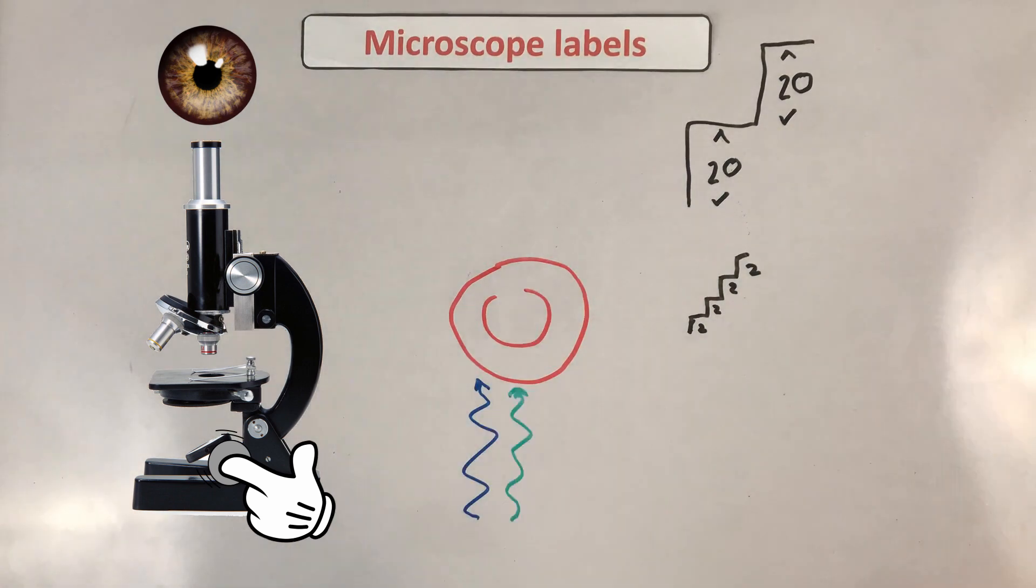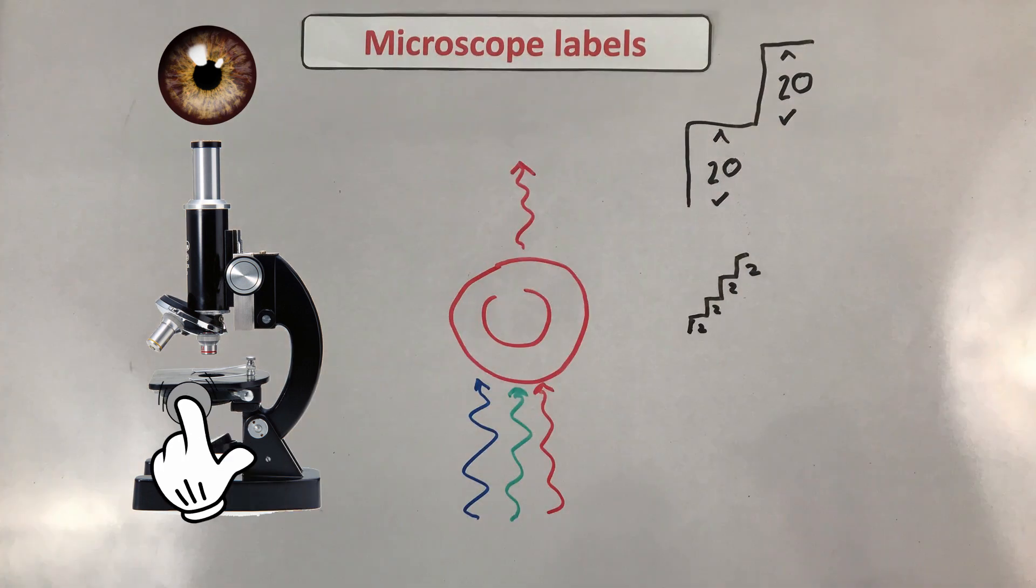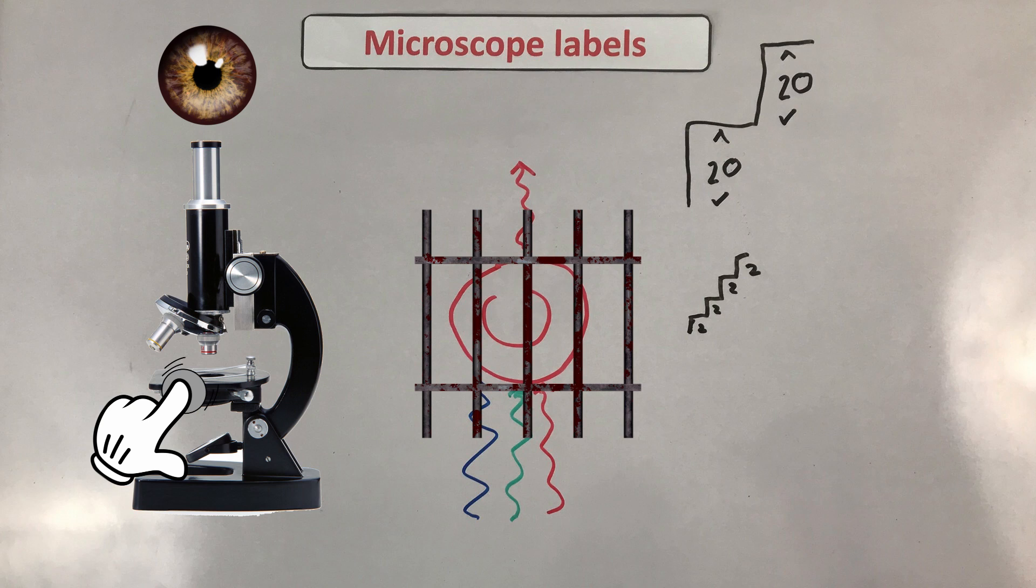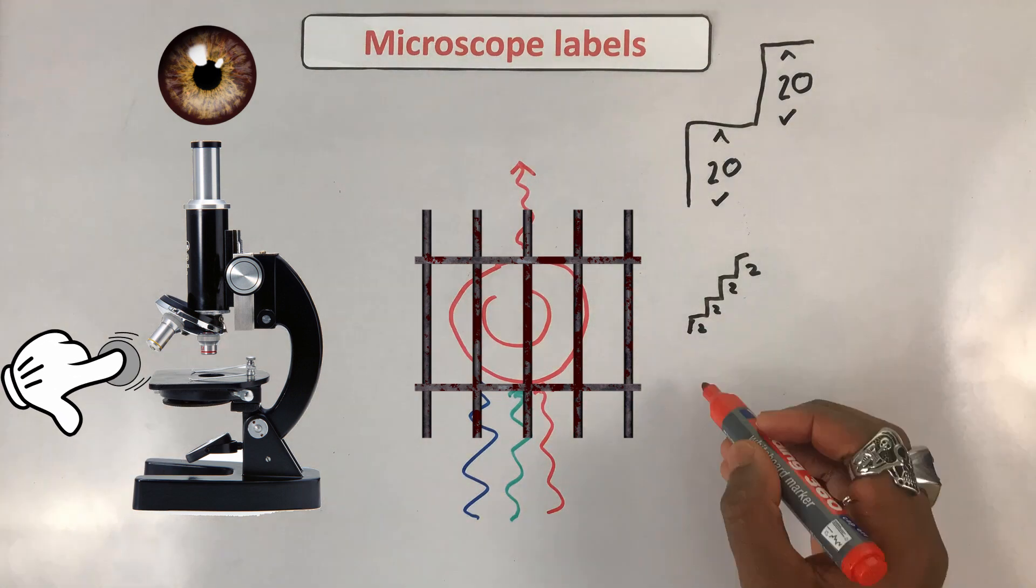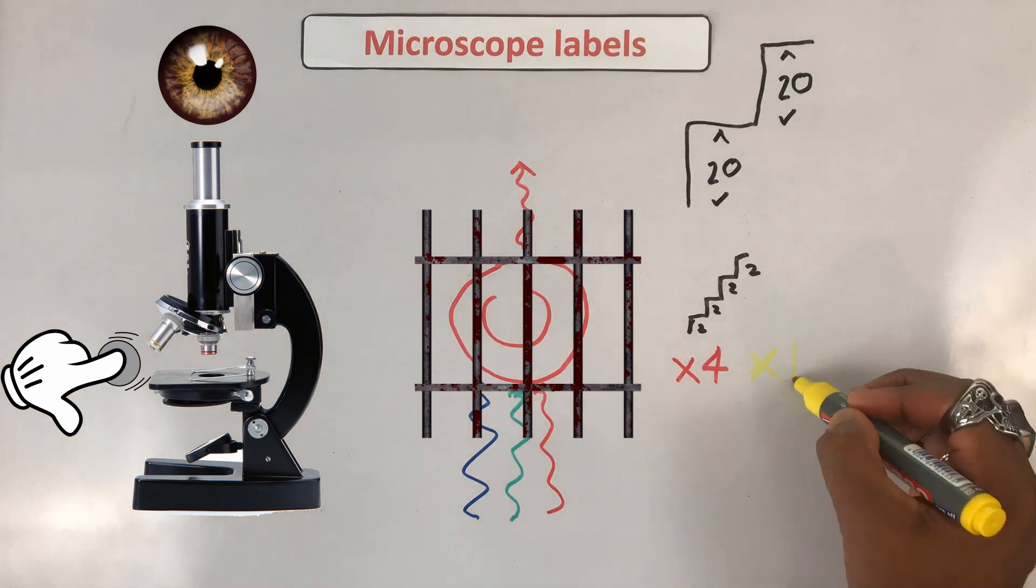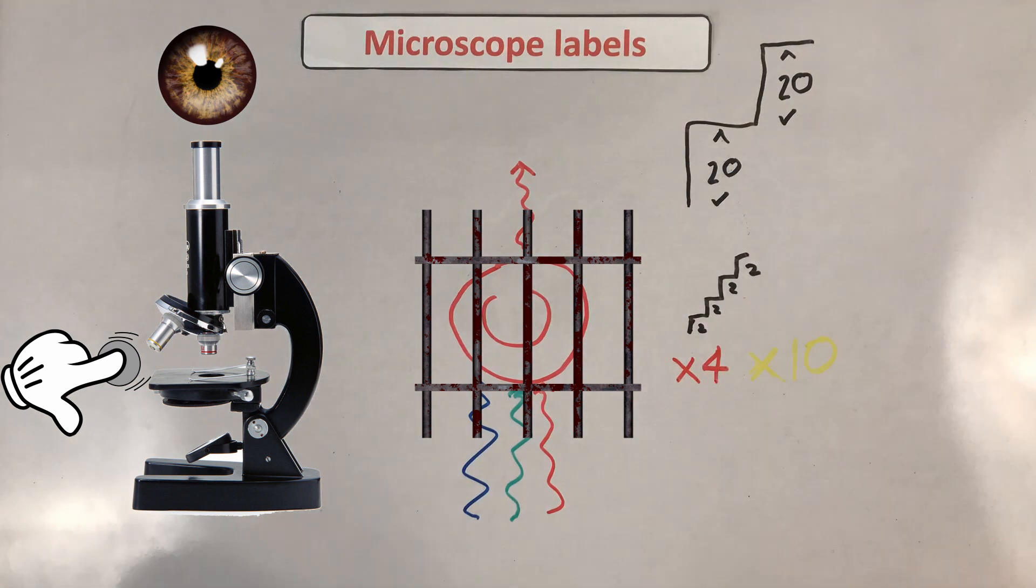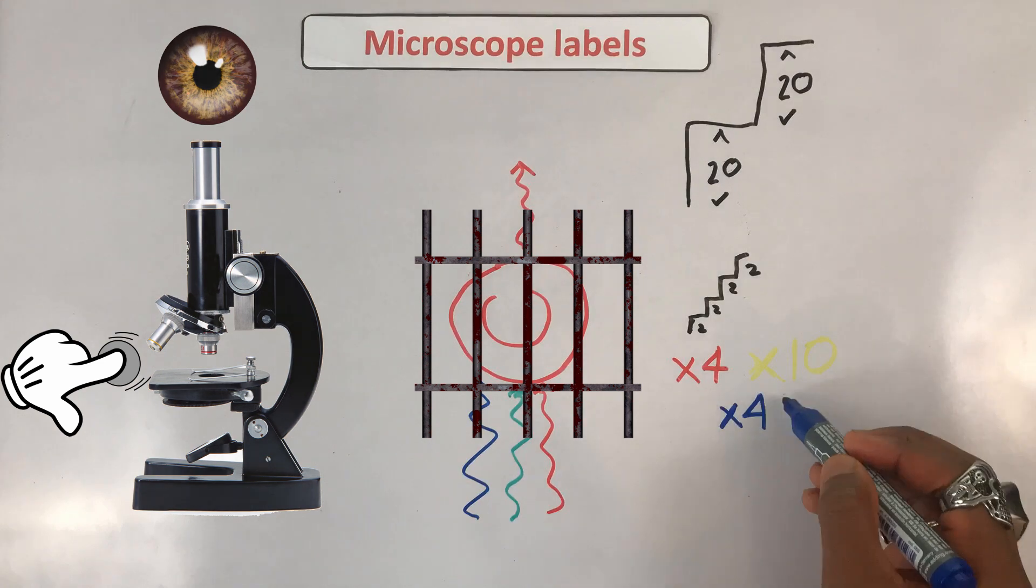You have your stage, which keeps your slide in place. And then here you've got your objective lenses. You've got three of them with different magnification. You've got your red one, which is ×4, your yellow, which is ×10, and your blue, which is ×40.